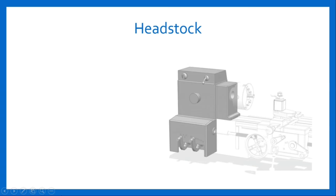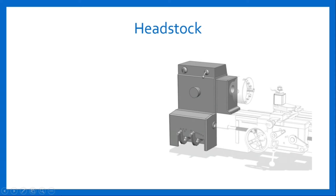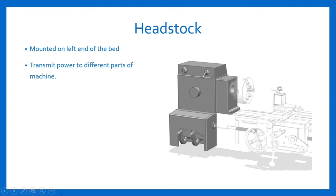The second major component of Lett Machine is headstock. Here is a figure of headstock. Headstock is an important part of Lett Machine which is mounted on the left end of the bed. The main function of headstock is to transmit power to different parts of Lett Machine. The headstock houses the spindle and means for supporting and rotating the spindle.